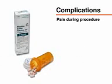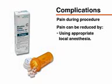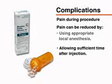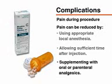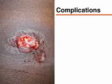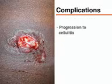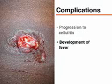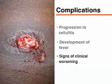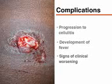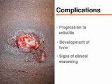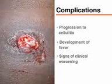The acidic environment of infected tissue leads to difficulties with adequate anesthesia from local anesthetic agents. Using appropriate amounts of anesthetic, allowing sufficient time after injection, or supplementing with oral and parenteral agents can increase patient comfort. Additional complications to watch for include progression to surrounding cellulitis, development of fever, or other signs of clinical worsening. These may prompt consideration for repeat incision and drainage or the need for antibiotic therapy. Most abscesses will respond well to simple incision and drainage and will not require treatment beyond packing changes and local wound care practices.